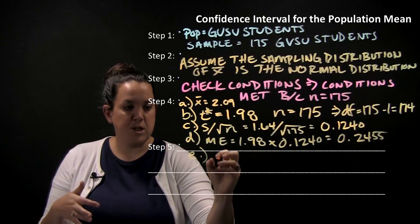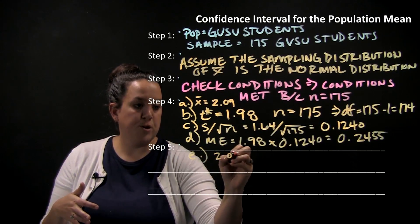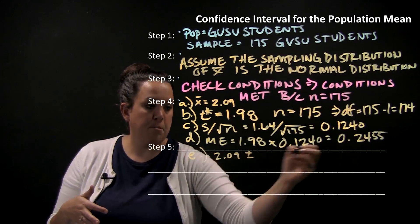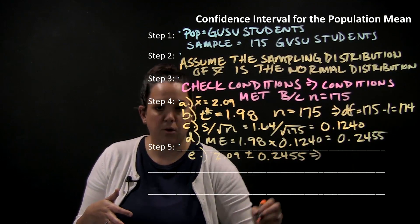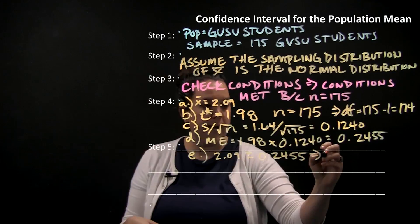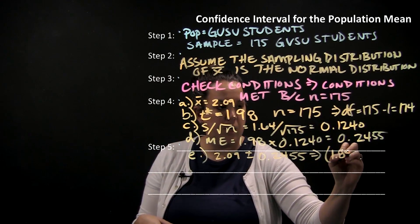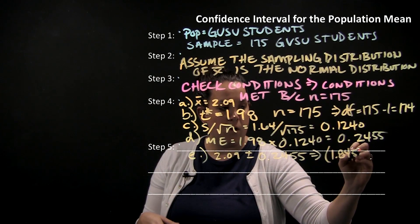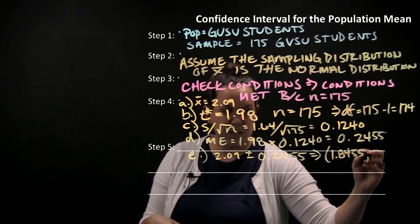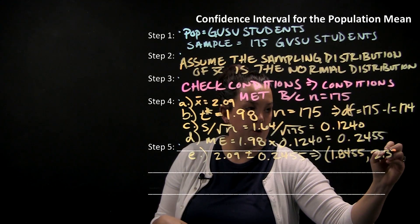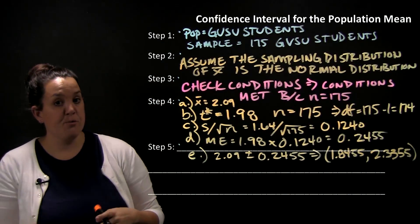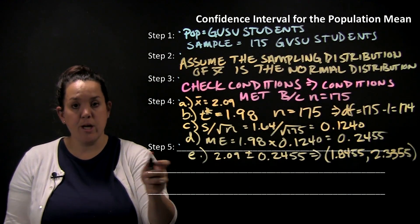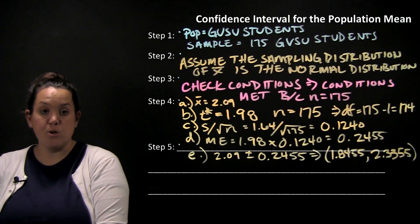We have 2.09 plus or minus that margin of error. First we're going to subtract to get our lower bound, which is 1.8455, and then add to get my upper bound, which is 2.3355. So that's the confidence interval without an interpretation added to it. In step five we want to interpret it.